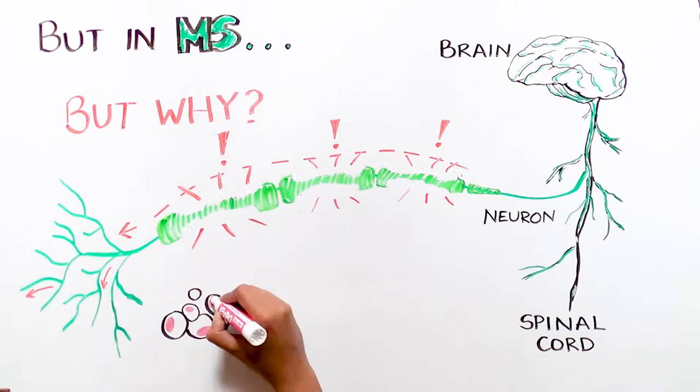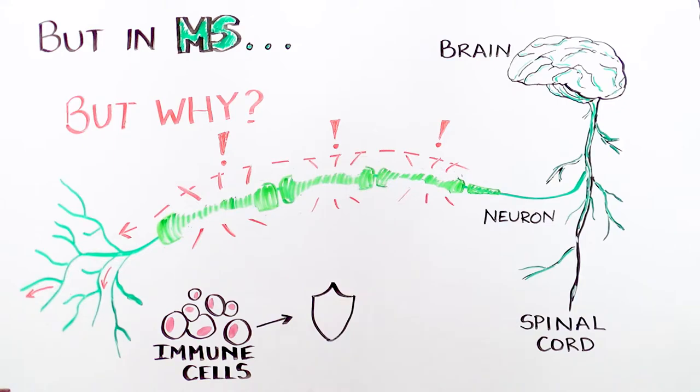It is mainly due to immune cells. The immune system is our body's natural defense system. It keeps us healthy by recognizing and killing foreign invaders that cause disease or infection, such as bacteria or viruses. However,